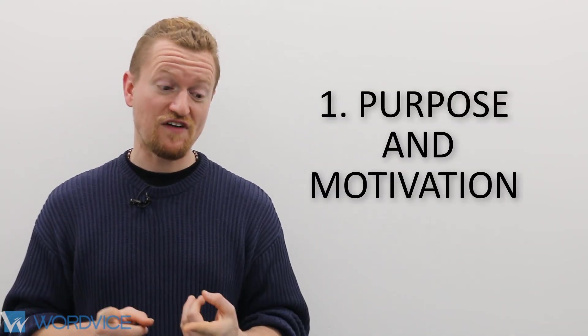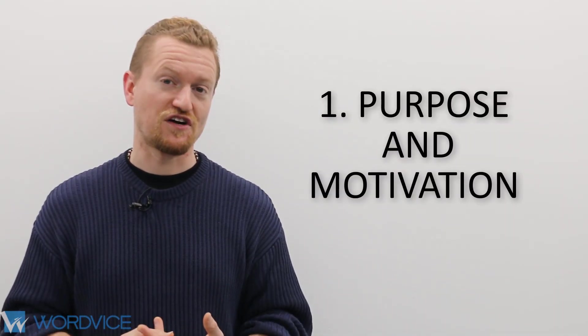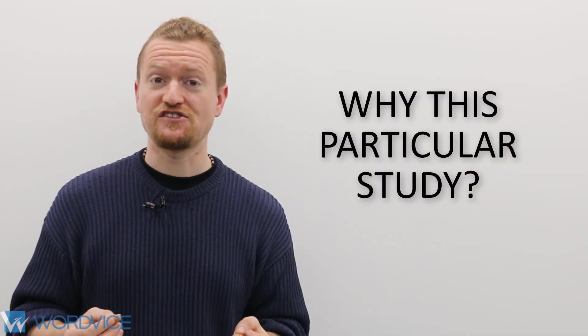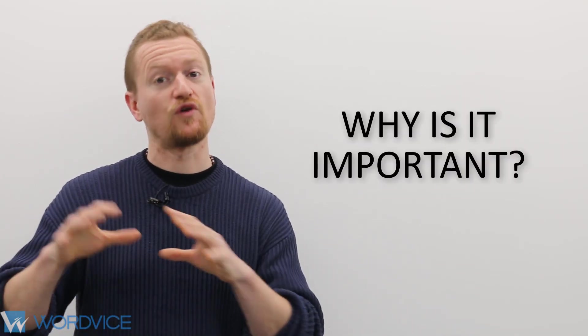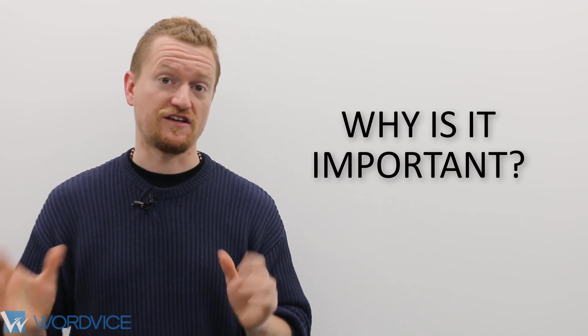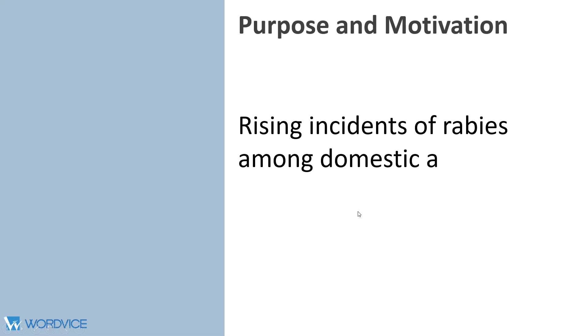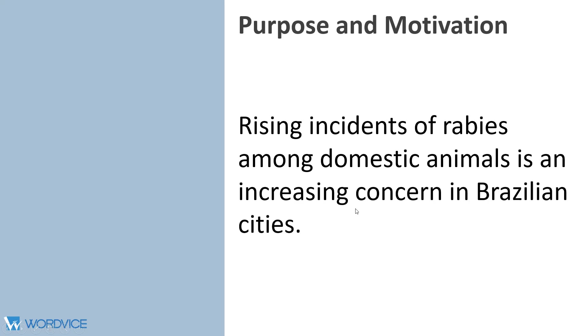In section one, you need to identify the purpose and motivation of your study. Now right off the bat, you need to get the reader's attention. So clearly state both your motivation for study and the purpose of your study. Why did you decide to do this particular study? And why is it important to your area of study or a wider audience? So your motivation sentence might look something like this: Rising incidence of rabies among domestic animals is an increasing concern in Brazilian cities.